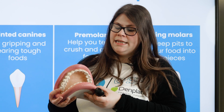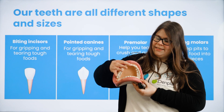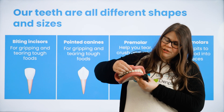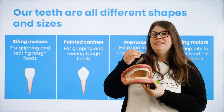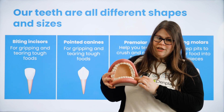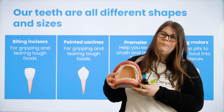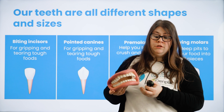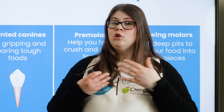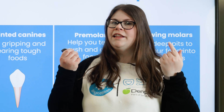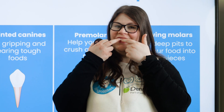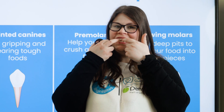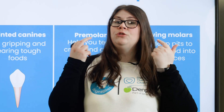Then demonstrate the chewing molars. This is also a good time to give examples of where you would use each tooth — your biting incisors to bite into a sandwich, and your chewing molars to break it down so it's small enough to swallow. You can then ask the children to show you where each type of tooth is in their own mouths, starting with the biting incisors at the front and the canine teeth.